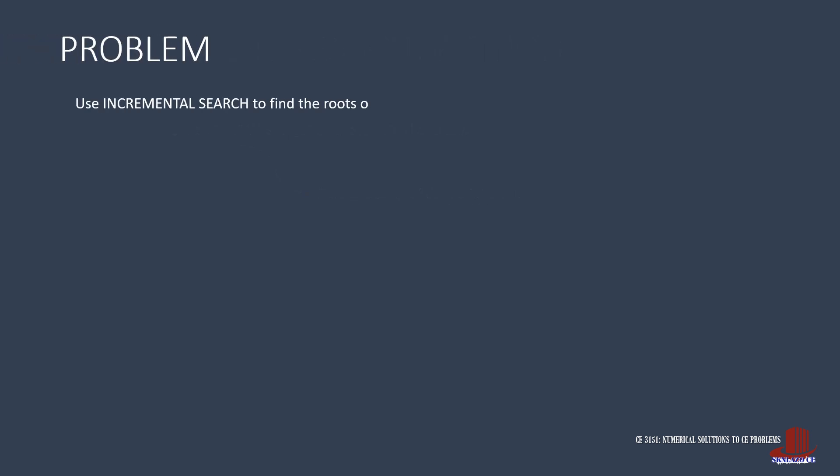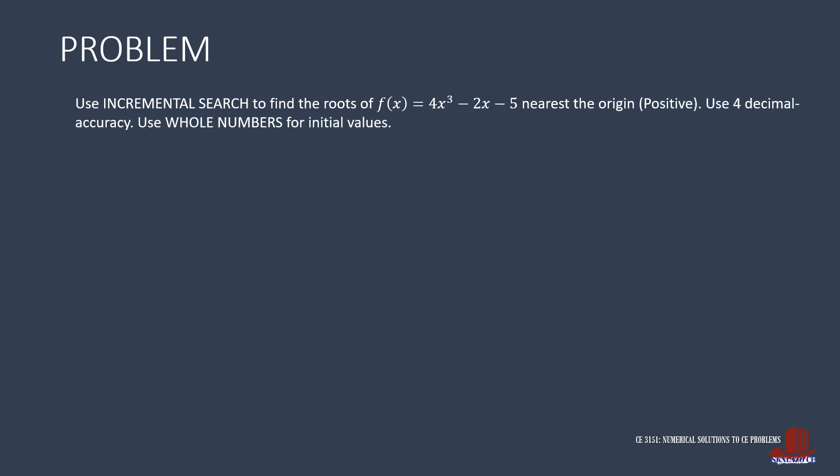The first example for this method involves the function y equal to 4x cubed minus 2x minus 5. We are to look for the root nearest the origin, and the preferred root is positive. Other instructions are the accuracy of iteration, which should be until 4 decimal places, and the initial values should be whole numbers. Before working on increments, we are to look for the initial values first, which will identify the interval to start with.